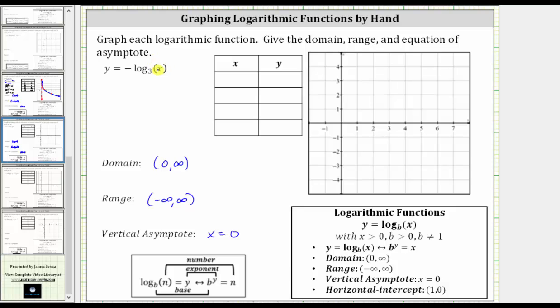And now to graph this by hand, we will isolate the log and then write the equivalent exponential equation to complete the table. To isolate the logarithm, we need to multiply or divide both sides by negative one, which gives us negative y equals log base three of x, and now we'll use this definition here to write the equivalent exponential equation, which is three raised to the power of negative y equals x.